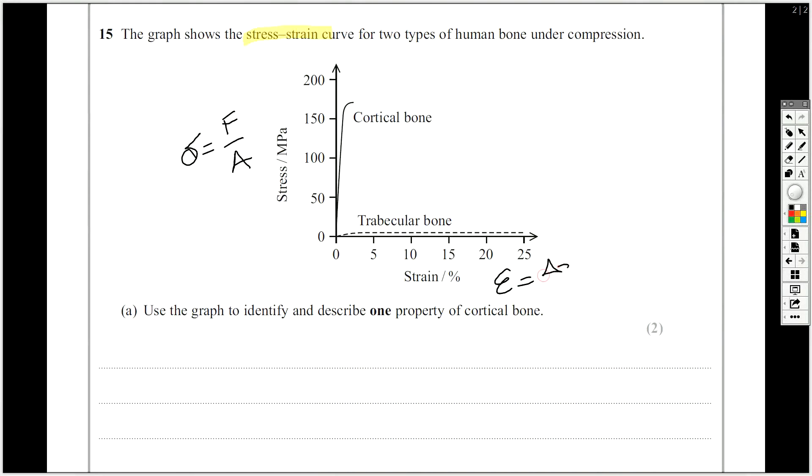So strain is delta X over X, and Young modulus is stress over strain. So there's your definitions that you need to know before you start anything with a graph like this.